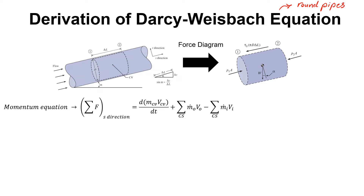As you can see, we have a pipe on the left-hand side photo, and we have selected the control volume. The pipe is angled, and the angle is alpha. The control volume is a cylindrical shape with a length of delta L and diameter D. S direction is parallel to the centerline of the pipe, and R direction is the radial direction.